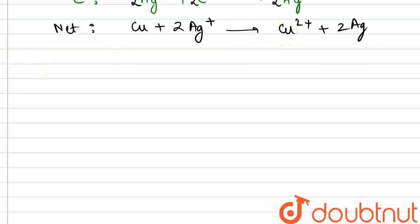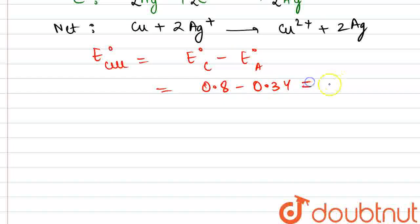Okay, now let's also calculate the value of E° of the cell. That would be equal to E° of cathode minus E° of anode. The values are given in the question: 0.8 minus 0.34 comes out to be 0.46 volt.